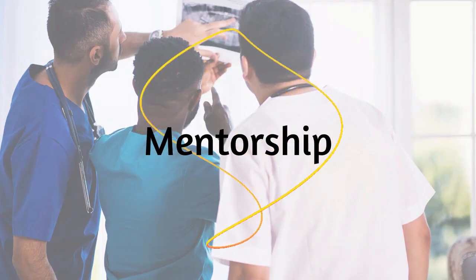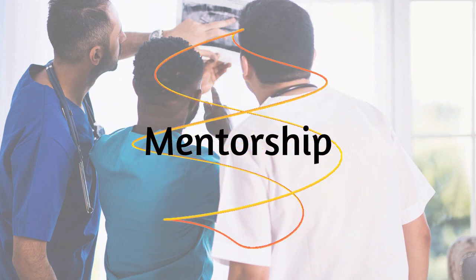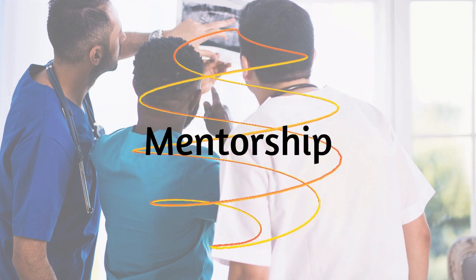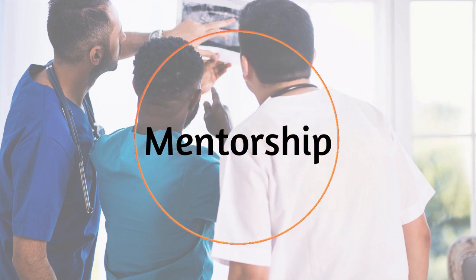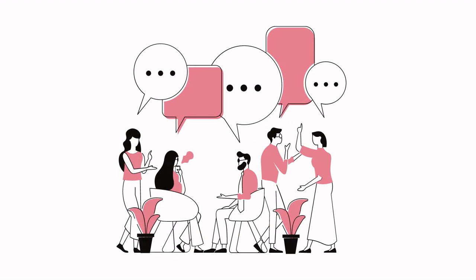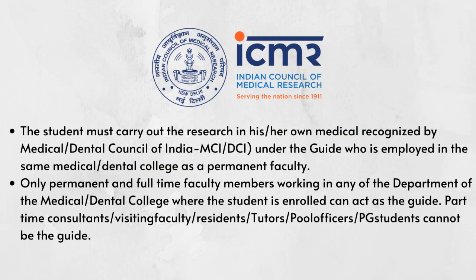Third is mentorship. They should have guided many students or PG students in the past. You can get an idea of their mentorship by talking to seniors who have worked under them. Also, ICMR guidelines state that a guide should be a permanent faculty member of the institute, at the rank of assistant professor, associate professor, or professor.